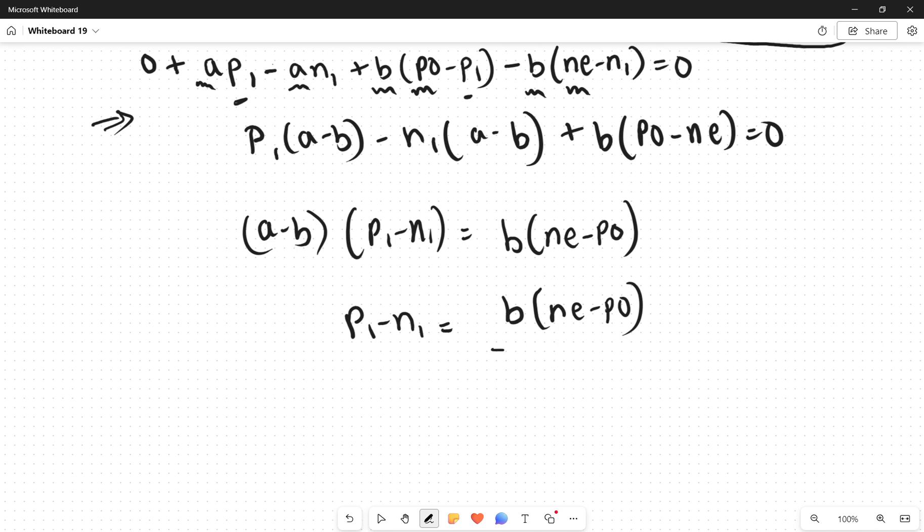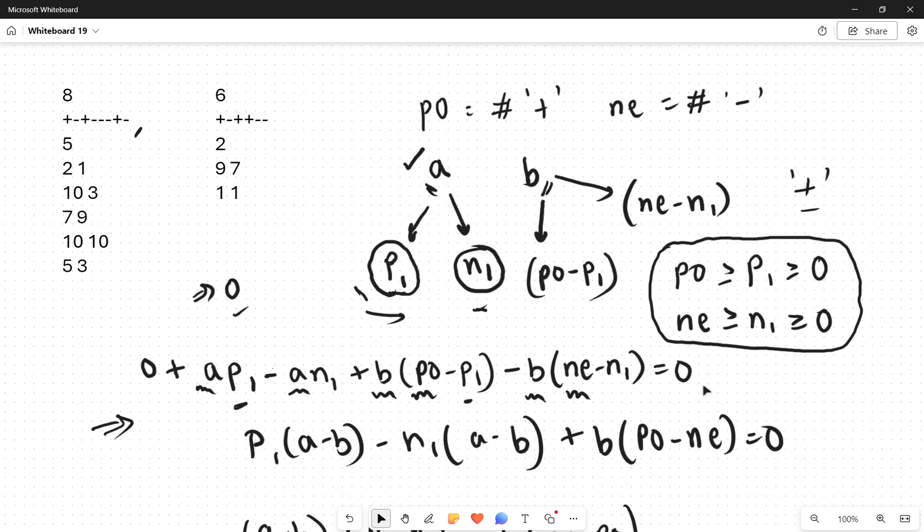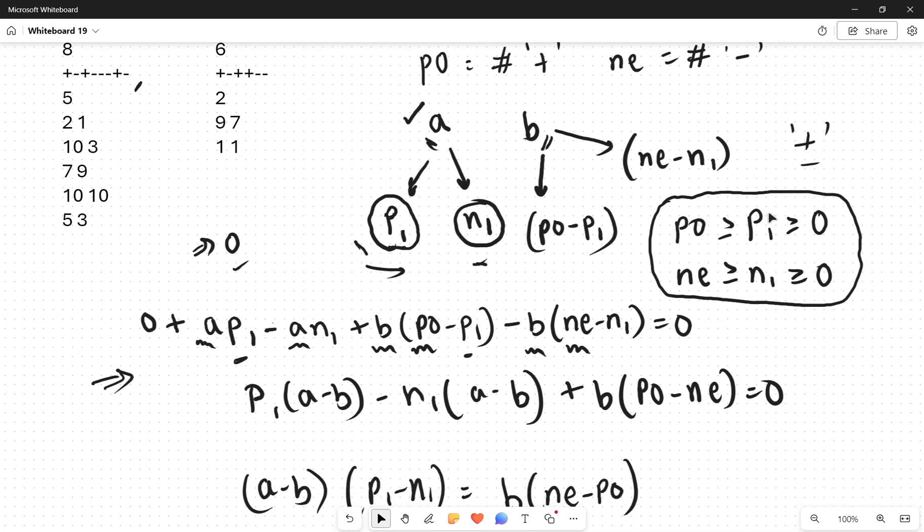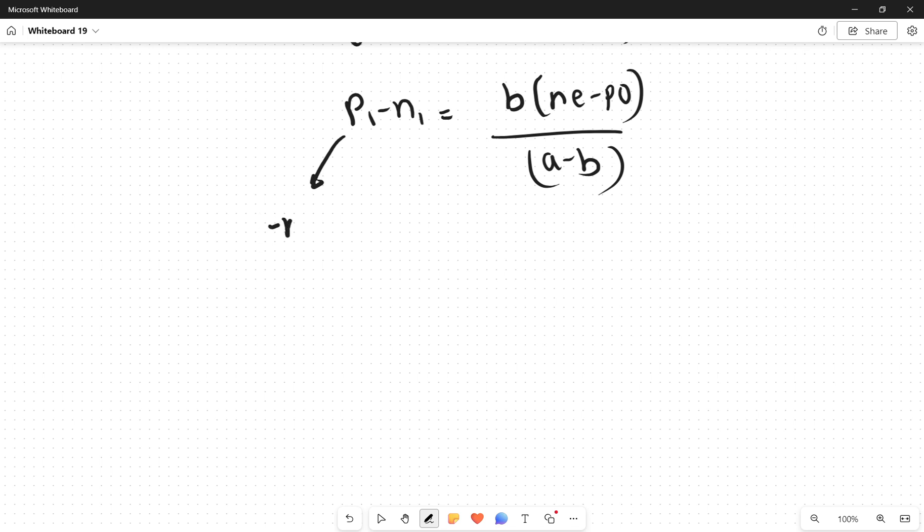So p1 minus n1 equals b*(NE minus PO) divided by (a minus b). I know that from these bounds PO is greater than or equal to p1 and NE is greater than or equal to n1, and both p1 and n1 are greater than or equal to 0. This expression has the minimum value of minus NE, because when n1 takes the value of NE and p1 takes the value of 0, then the minimum value of this expression will be negative NE. And the maximum value will be positive PO.